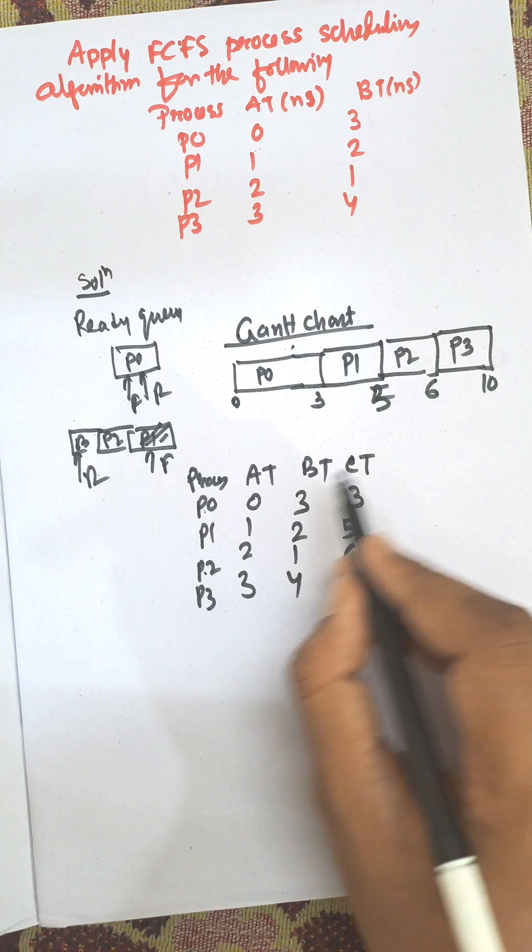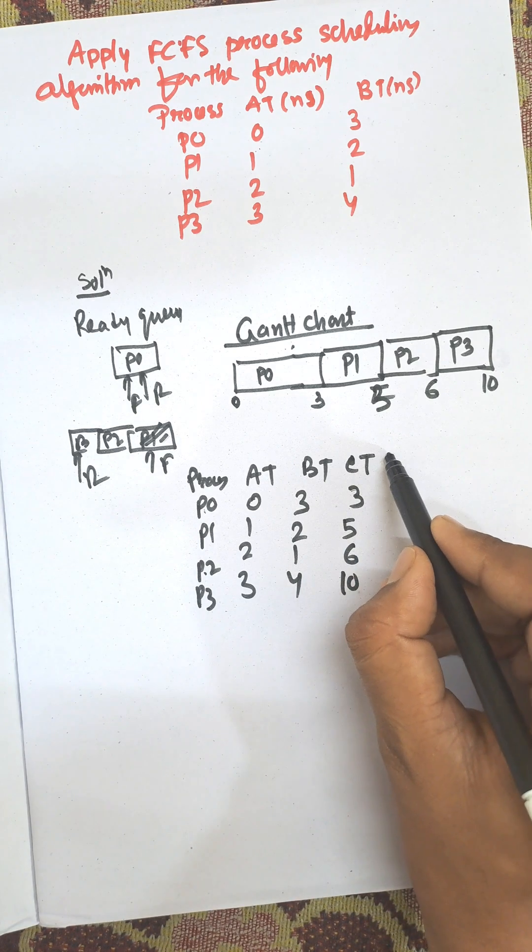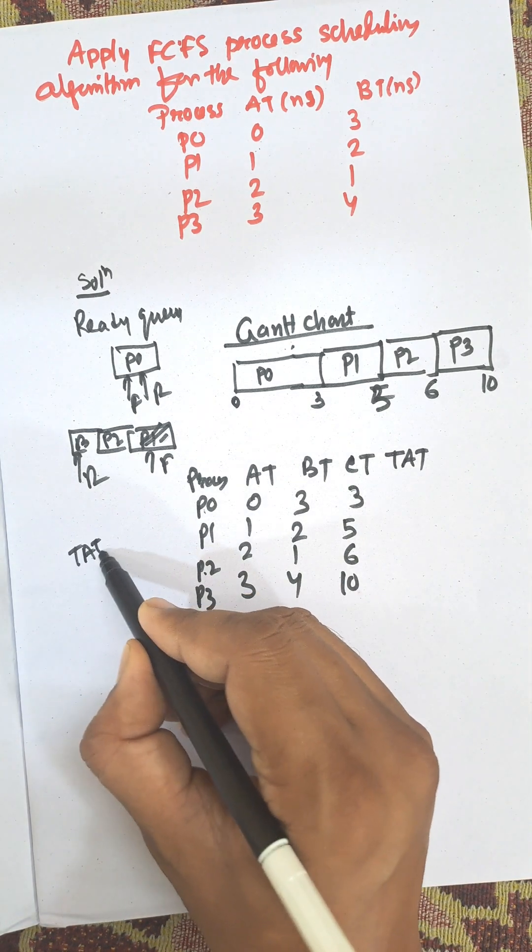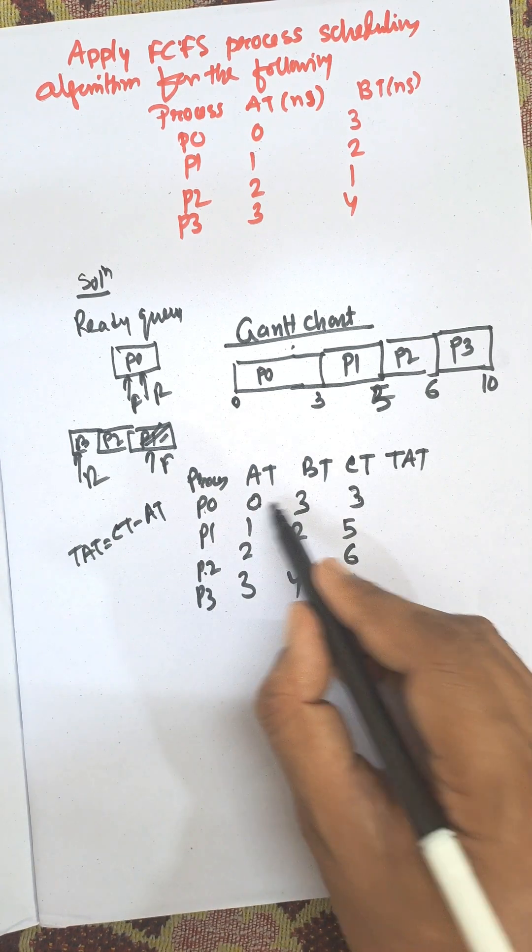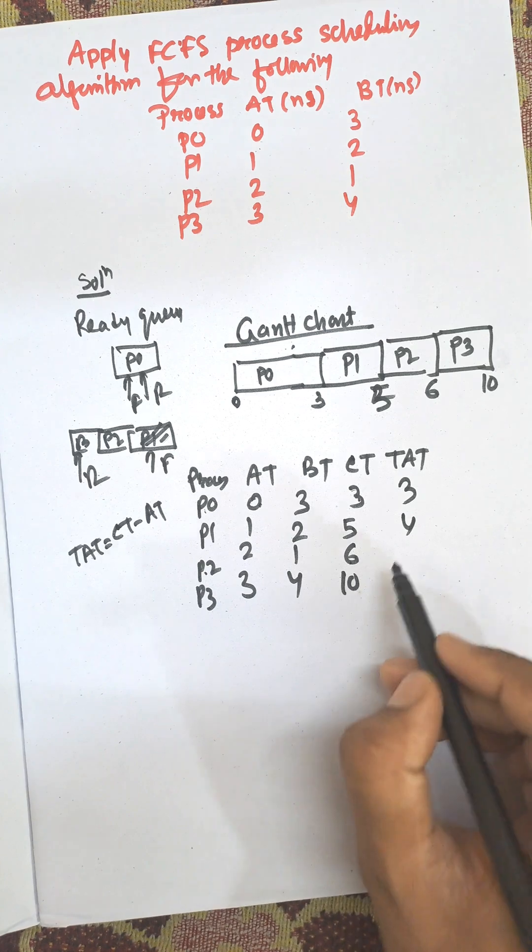Now the turnaround time: TAT equals completion time minus arrival time. 3 minus 0 equals 3. 5 minus 1 equals 4. 6 minus 2 equals 4. 10 minus 3 equals 7. These are the turnaround times.